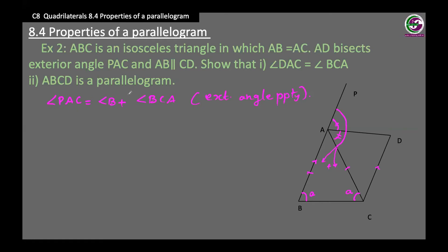The angle outside equals the sum of the interior opposite angles. Since both base angles are equal, PAC equals 2A. AD bisects PAC, so angle DAC equals half of angle PAC, which is A. Similarly, angle BCA equals A. Therefore angle DAC equals angle BCA, since both equal A.